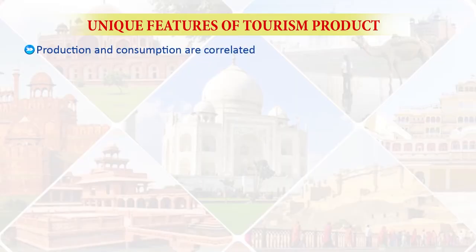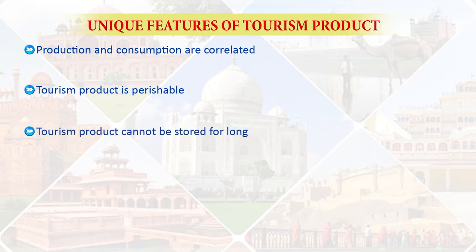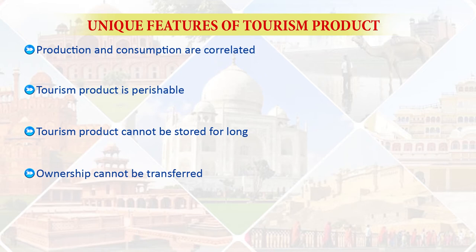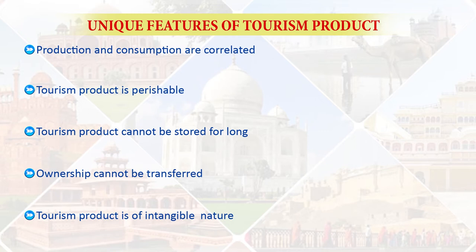The tourism product is unique in nature because it has certain peculiar features — production and consumption are both correlated. This tourism product is a perishable product because it cannot be stored for long. Ownership cannot be transferred; you may stay in a hotel, you can hire or rent it, but you cannot transfer ownership or claim to be the owner. Similarly, you may hire a taxi but you cannot become the owner of the taxi. So tourism product is a bit unique in nature.